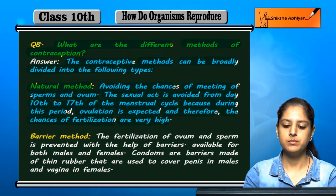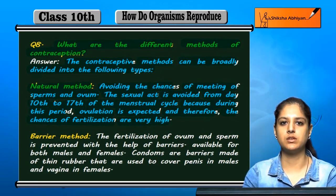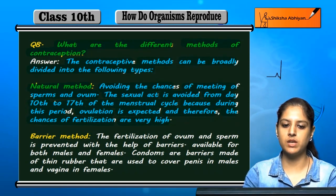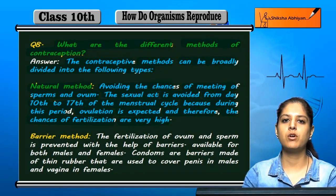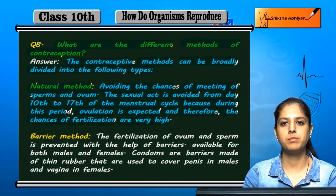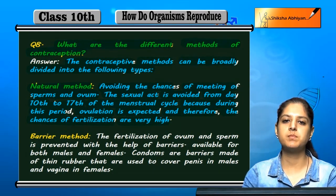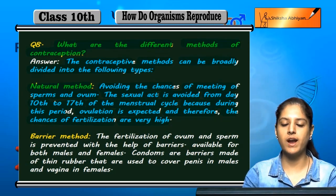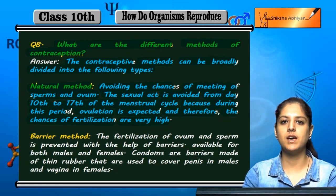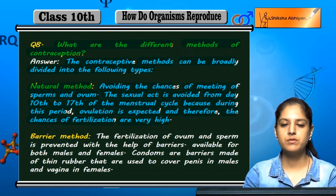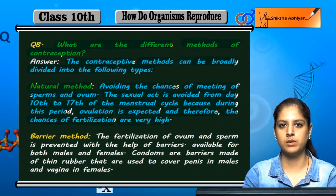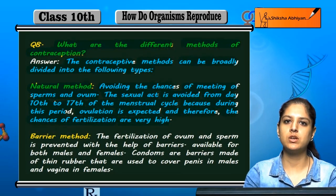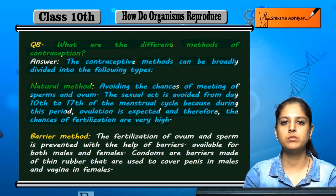Menstrual cycle ke 10th se 17th day ke beech ovulation, matlab egg formation, sabse zyada expected hoti hai. Agar is duration mein sexual act ko avoid kiya jaye to fertilization nahi hogi. Is duration mein avoid karne se naturally ek contraceptive measure ke roop mein use kar sakte hain.